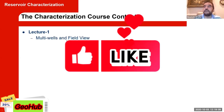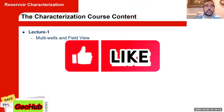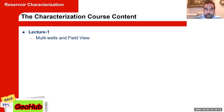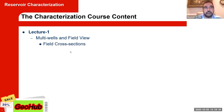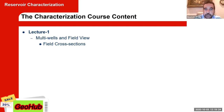We will go through multi-well and field view — how can I look at the field view from multiple points of view? This is what we call a field cross section. Today we'll build a field cross section — how can I build a field cross section through multiple wells that I have in my field?